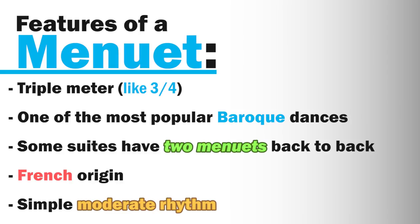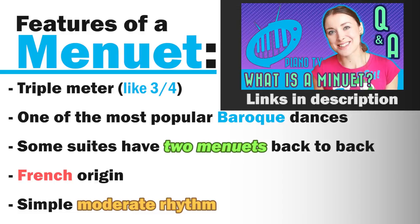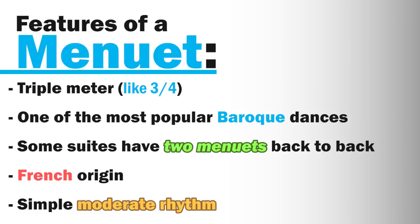Some features of a minuet: they're in triple meter, usually 3/4. They're one of the most popular Baroque dances and you'll especially see them in beginner-level books because many minuets are quite a bit easier than other dances. Some suites like this one have two minuets back to back. They have French origin, and the rhythm is relatively simple and not too fast.